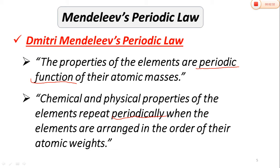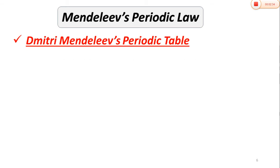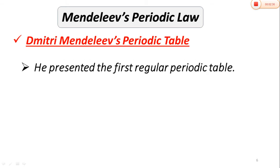The first regular periodic table — this is the first regular periodic table. When the elements are arranged, Mendeleev is the first scientist who made a proper regular table and arranged the elements. This is a very wide contribution.